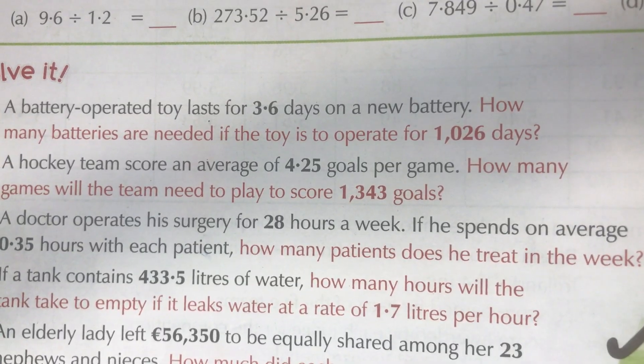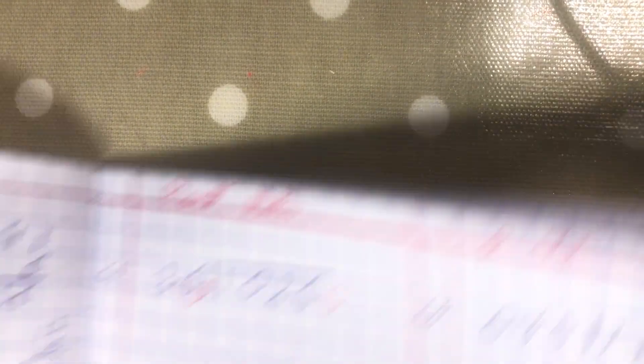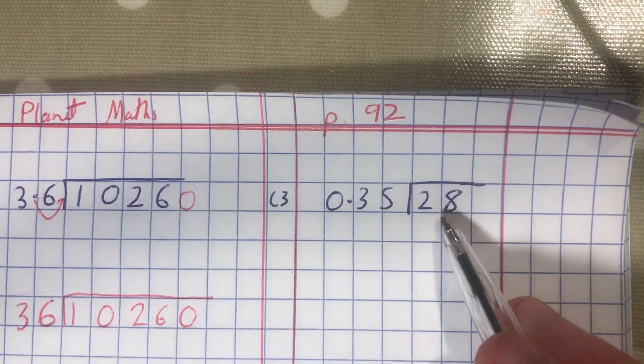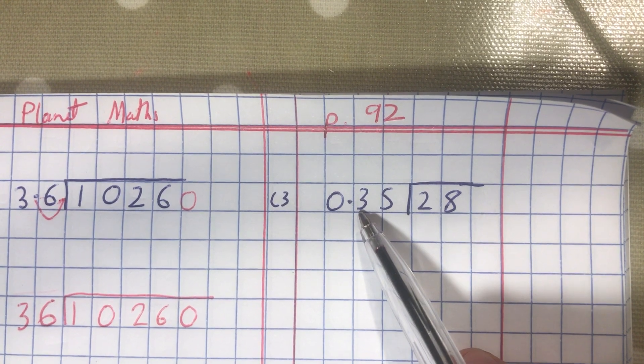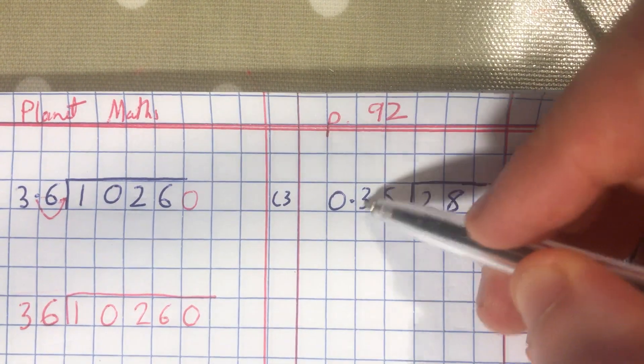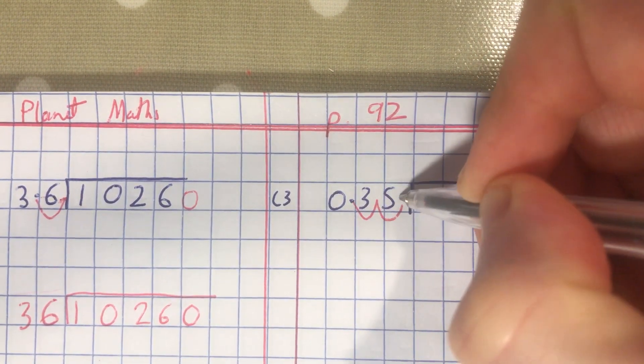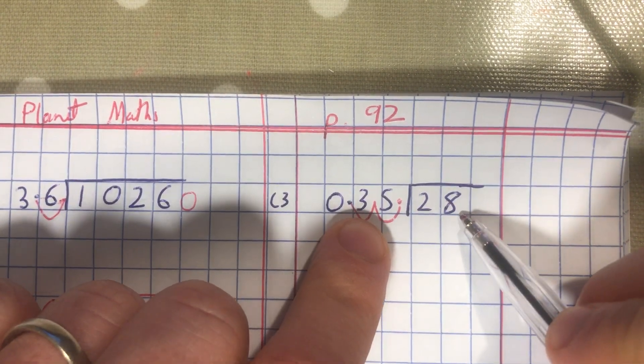So just zoom out a little bit there. So what we have to do is, we have 28 hours, the doctor operates his surgery for 28 hours a week. If he spends an average of 0.35 hours with each patient, how many patients does he treat in a week? So again, like we've been doing, you can't have your decimal out here, so we multiply that by 100 or we jump it two places to the right, but there's no decimal inside here, so what do you think you need to do?